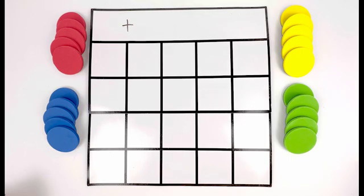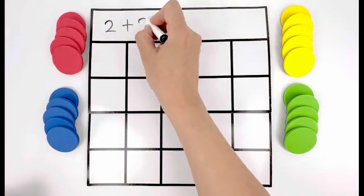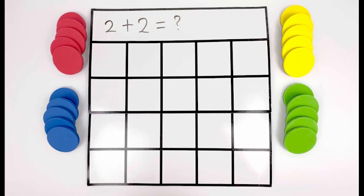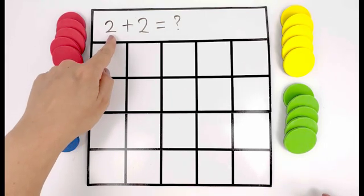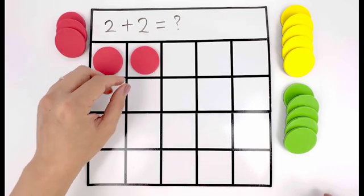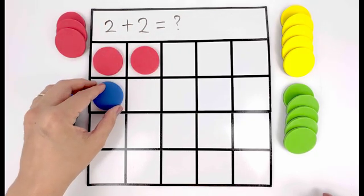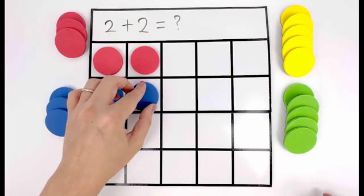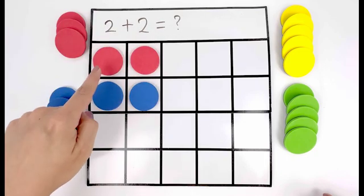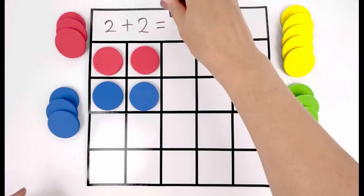Let's start with a simple equation: two plus two equals. Let's find out. Two, so I take two circles, one two, plus two, I need two more circles, one two. So two plus two equals one, two, three, four. It equals four.